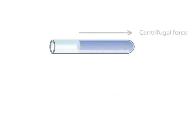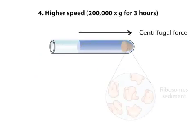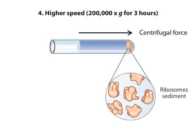A fourth centrifugation, at a still higher speed, sediments ribosomes, leaving only the soluble portion of the cytoplasm, the cytosol, in the supernatant.